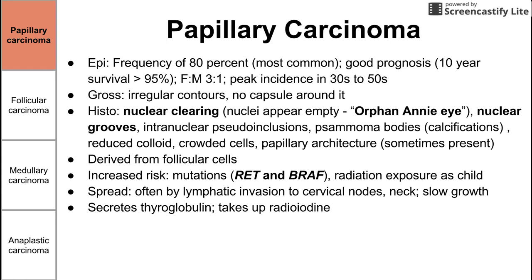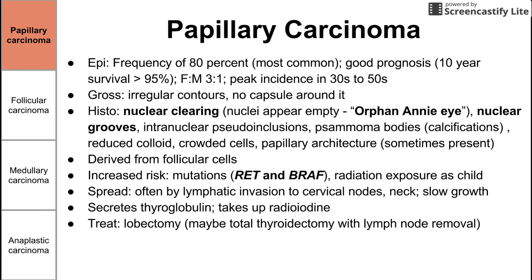Because papillary carcinoma is derived from follicular cells, it secretes thyroglobulin — a precursor to thyroid hormones — and it also takes up radioiodine. Treatment is lobectomy, removing the entire affected cancerous lobe, and possibly the entire thyroid if necessary or if it has started spreading. High-risk patients also receive radioiodine treatment to kill remaining cancerous tissue that couldn't be resected surgically.